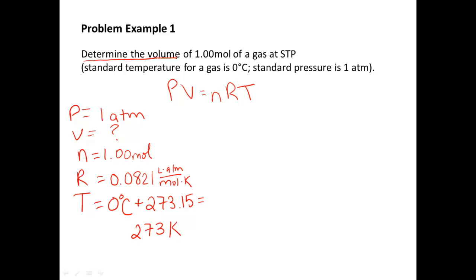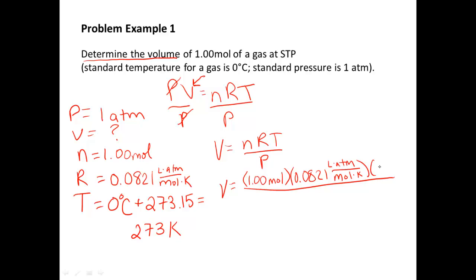To solve for V, what we need to do is we need to get this V by itself in the equation. I'm going to divide both sides by whatever V is multiplied by in order to get it alone. So we're going to divide both sides by P so that the P cancels out. So we have V is equal to nRT over P. So I'm going to write out those values. N is 1.00 moles, R is 0.0821 liters atmospheres over mole Kelvin, and our T is 273 Kelvin. And we're going to be dividing by our pressure, which is 1 atmosphere.